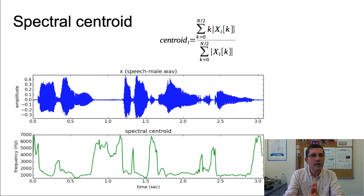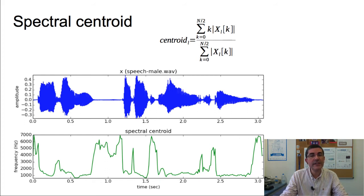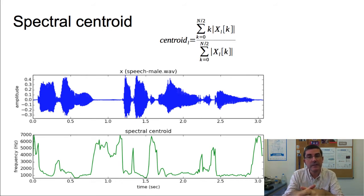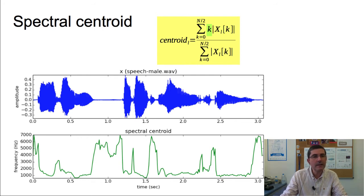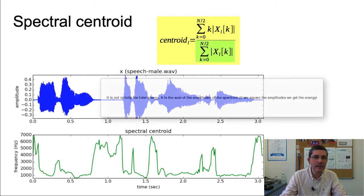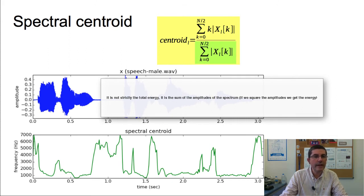Now we talk about a descriptor that tries to characterize the spectral shape of a sound — the spectral centroid, which indicates where the center of mass of the spectrum is. Perceptually, it is very much related to the impression of brightness of a sound. It is calculated as the weighted mean of the frequencies present in the signal, summing over the whole spectrum, weighting by every frequency and normalizing by the total energy.